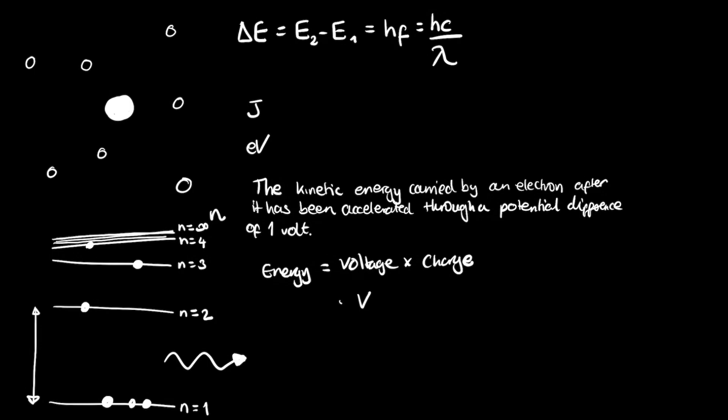So if we simply multiply them together, the charge of an electron multiplied by the unit of voltage, the volt, we're going to get a unit which has dimensions of energy. And that is the electron volt.